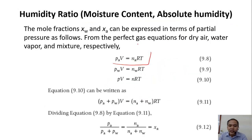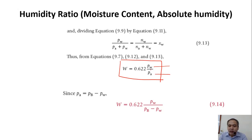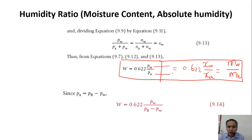Based on the perfect gas law, we can derive and convert to obtain the absolute humidity formula. So the pressure of vapor — partial pressure of vapor — divided by the partial pressure of dry air gives us absolute humidity equal to 0.622 times mole of water vapor per mole of dry air, or equivalently mass of water vapor per mass of dry air. These are the three equations we can use to calculate absolute humidity. The partial pressure of dry air equals barometric pressure minus water vapor pressure.